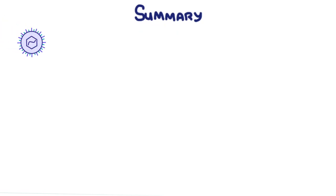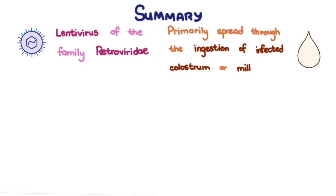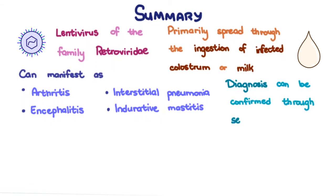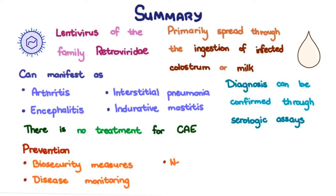To summarize: caprine arthritis encephalitis is caused by a lentivirus of the family Retroviridae. It is primarily spread through the ingestion of infected colostrum or milk. The disease can manifest as arthritis, encephalitis, interstitial pneumonia, and/or indurative mastitis. Diagnosis can be confirmed through serologic assays. There is no treatment for caprine arthritis encephalitis. Prevention is by the usual biosecurity measures, disease monitoring, and removal of newborn kids from infected does at birth.